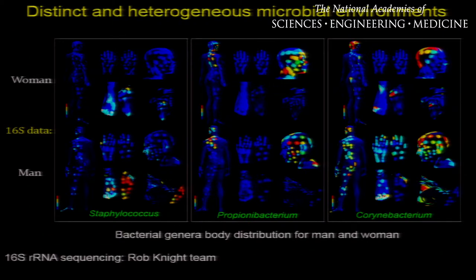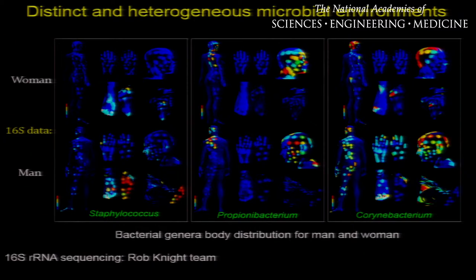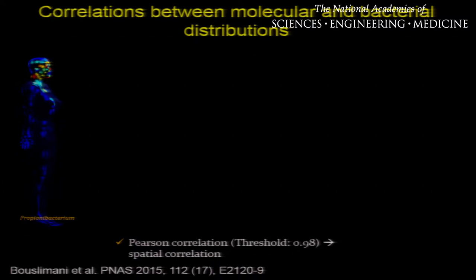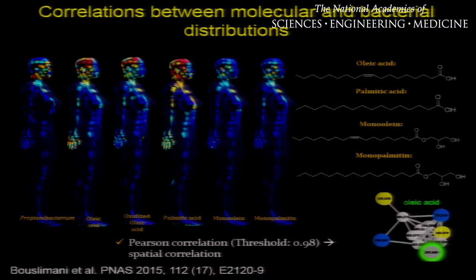Can we compare these two to see how the microbes or molecules affect each other? In order to do this, we use Pearson correlation and compare the distribution of each molecule with each microbe or each microbe with each molecule. I just mentioned that Propionibacterium was mainly localized at the face, chest, and back of the man and women. When we compared this distribution with the distribution of every molecule detected in our mass spec experiment, we found that this distribution strongly correlated to the distribution of free fatty acids.